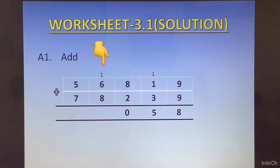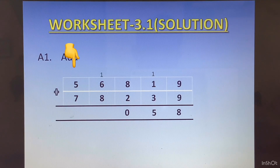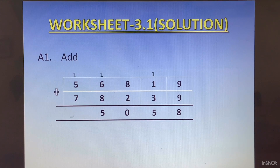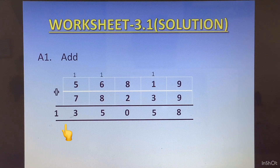Now in the thousands column we have 6 plus 8, which is 14. 14 plus 1 of the carry makes it 15. The 1 will go into the ten-thousands column on top as carry and 5 will be written at the bottom of the thousands column. In the ten-thousands column we have 5 plus 7, which is 12, plus 1 carry makes 13. We write 13 at the bottom. The answer is 135058.